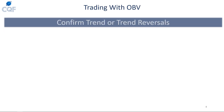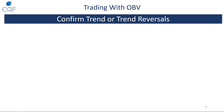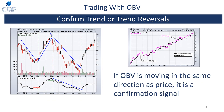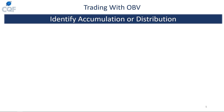One way to actually trade with OBV is to help confirm a trend or trend reversal. Here I have two charts — BBY on the left and AutoZone on the right — and in both cases OBV is moving in the same direction as price, confirming the trend. Looking at Best Buy, OBV has the same peak as the price, confirming the trend reversal. It's a powerful confirmation signal, not a standalone indicator. You can combine it with price or moving averages to confirm trend or trend reversals.